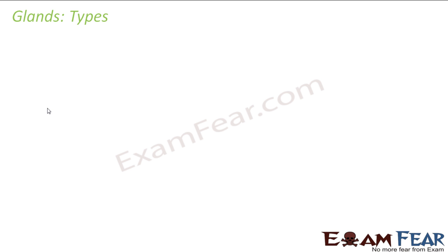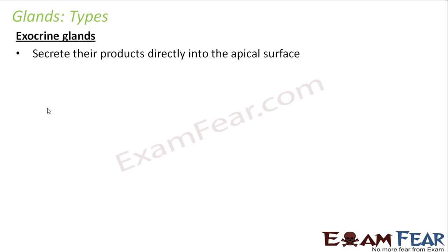Glands produce and secrete chemical substances. There are two ways they can do this: one is they can secrete them directly into the blood, and the other is they can secrete them on the apical surface of some cellular component. Based on this, glands are divided into two types. The first type we will talk about is exocrine glands.